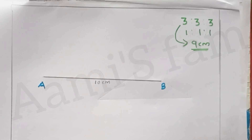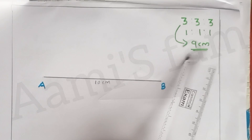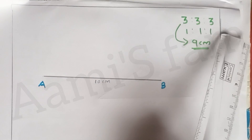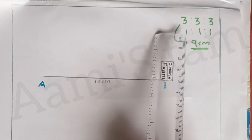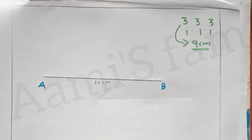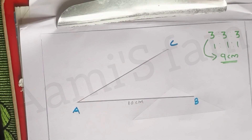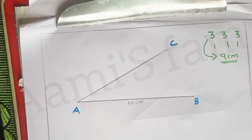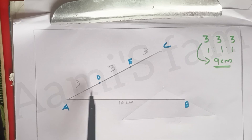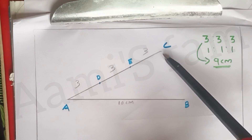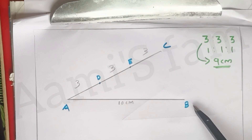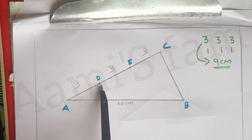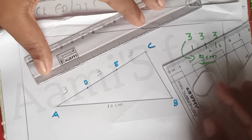We have to take any measurements. If we have 2:2:2, the ratio is 1:1:1, it's the same. Now we have 3:3:3, then we have 9cm. We take 3 to 3 parts. This is the equilateral triangle. If every angle is in the middle, then we add points E, D, and parallel lines.